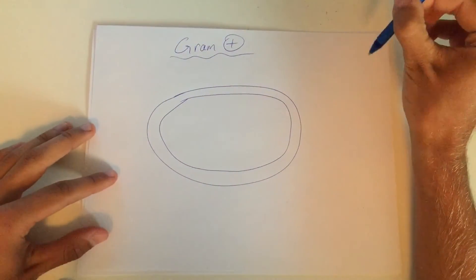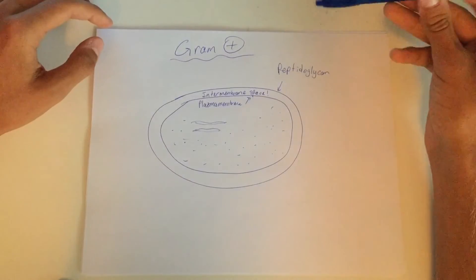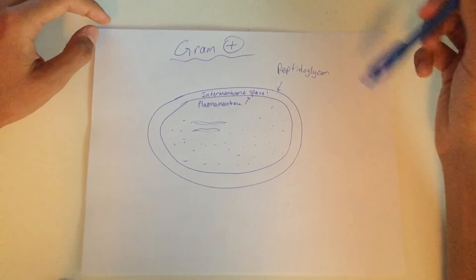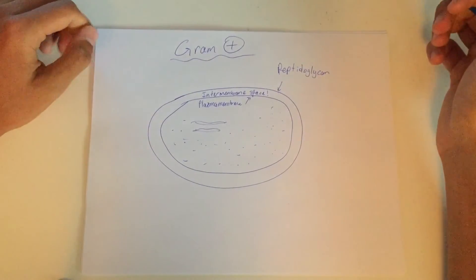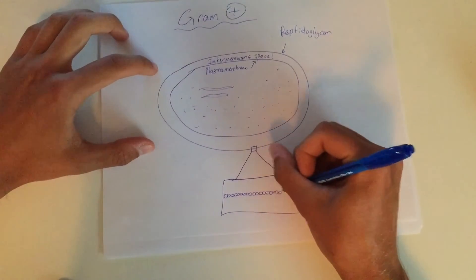Ultimately, this results in gram-positive bacteria being quite vulnerable to antibiotics, as they inhibit or restrict the growth and synthesis of peptidoglycan, which makes up the cell wall of gram-positive bacteria.